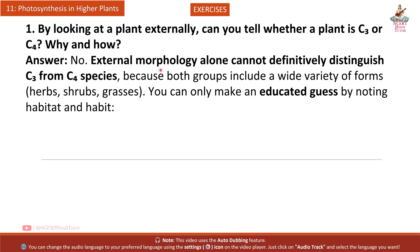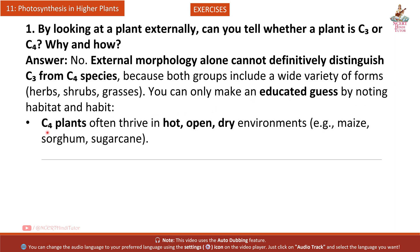Answer: External morphology alone cannot definitely distinguish C3 and C4 species, because both groups include a wide variety of forms - herbs, shrubs, grasses. You can only make an educated guess by noting habitat and habit. C4 plants often thrive in hot, open, dry environments.